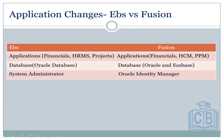Application changes EBS versus Fusion: in EBS applications we have Financials, HRMS, Projects; in Fusion we have Financials, HCM and PPM. For the database, EBS uses Oracle Database; Oracle Fusion also uses Oracle database. In EBS we have System Administration; in Fusion we have Oracle Identity Manager.